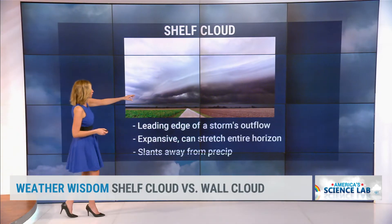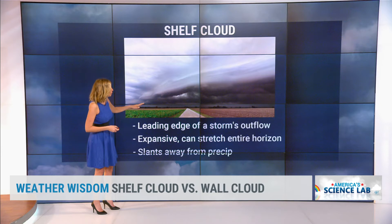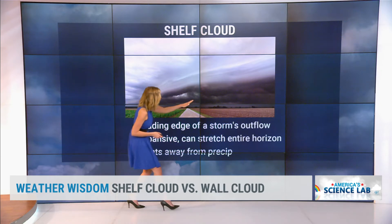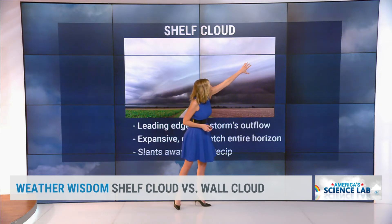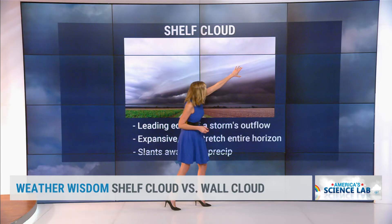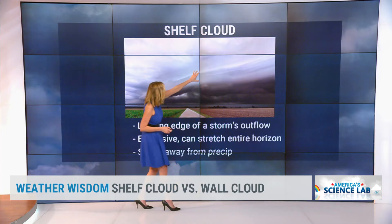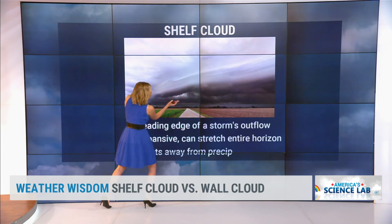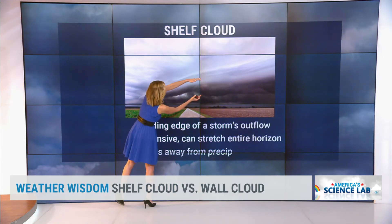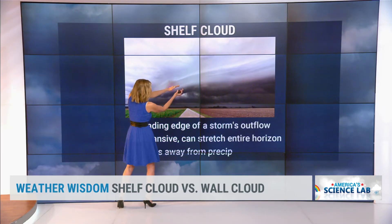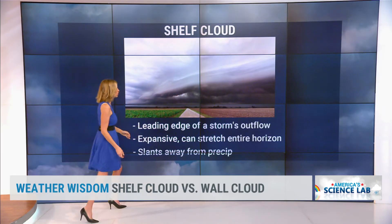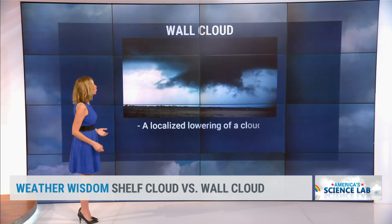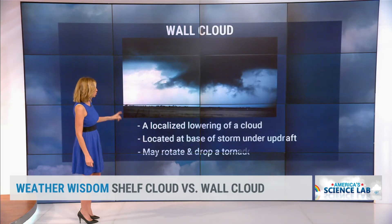A shelf cloud is the leading edge of a thunderstorm's outflow. Winds are coming into the thunderstorm and then out like this. That is the air coming out, and so that's what causes a shelf — that warm moist air coming in, and then you get that condensation and that cloud in between, and it's going to slant away from the precipitation.